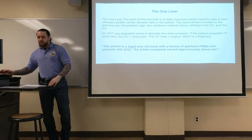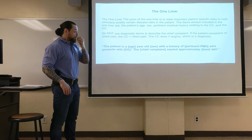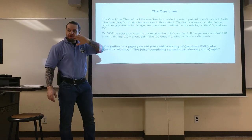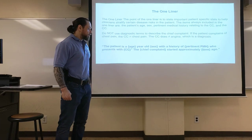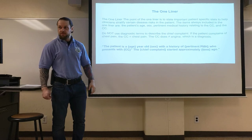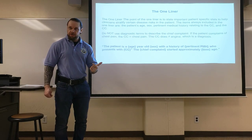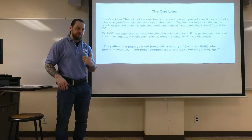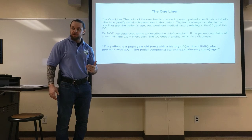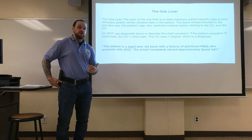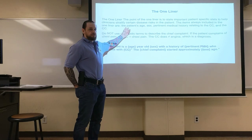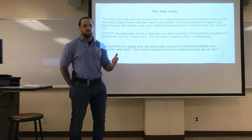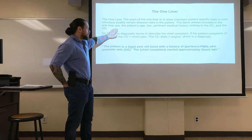The first step is the one-liner. The point of the one-liner is to risk stratify. Think of it like this: 'I'm bringing you a 65-year-old male who presents with chest pain' versus 'I'm bringing you a 65-year-old male with coronary artery disease, hypertension, diabetes, and three stents who's having chest pain.' Who has a higher risk of MI or acute coronary syndrome? The second — and that information is risk stratification. Pertinent history makes the patient high risk. That's why we include it.